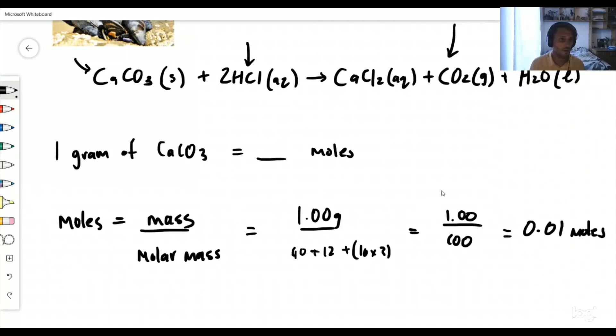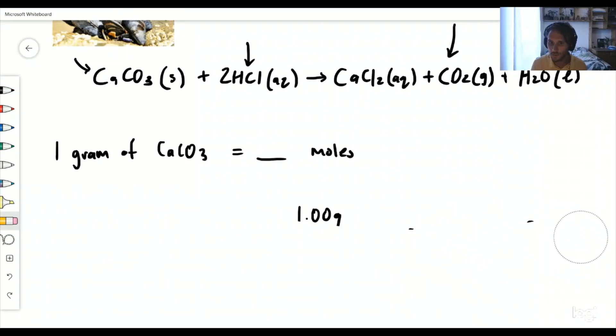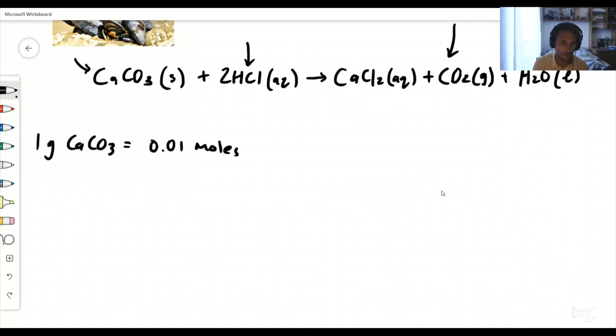So we've got 0.01 moles of CaCO3, calcium carbonate. Let's write a new equation at the bottom here. We're not working with one mole, we're working with 0.01 moles of this substance. So let's go 0.01 calcium carbonate. Now we're going to use the mole ratios.